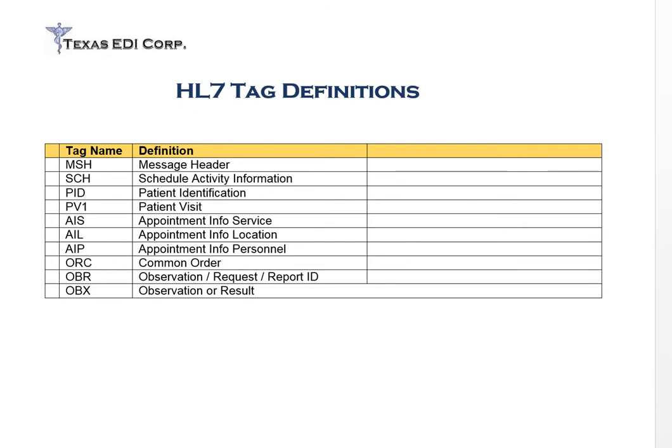There are a couple different types of HL7. The traditional formats use these tags, and then the newer format, which they call FHIR, has a completely different format. I'm going to stick with the traditional HL7 because I don't think that FHIR HL7 has the saturation yet, but both could be useful.